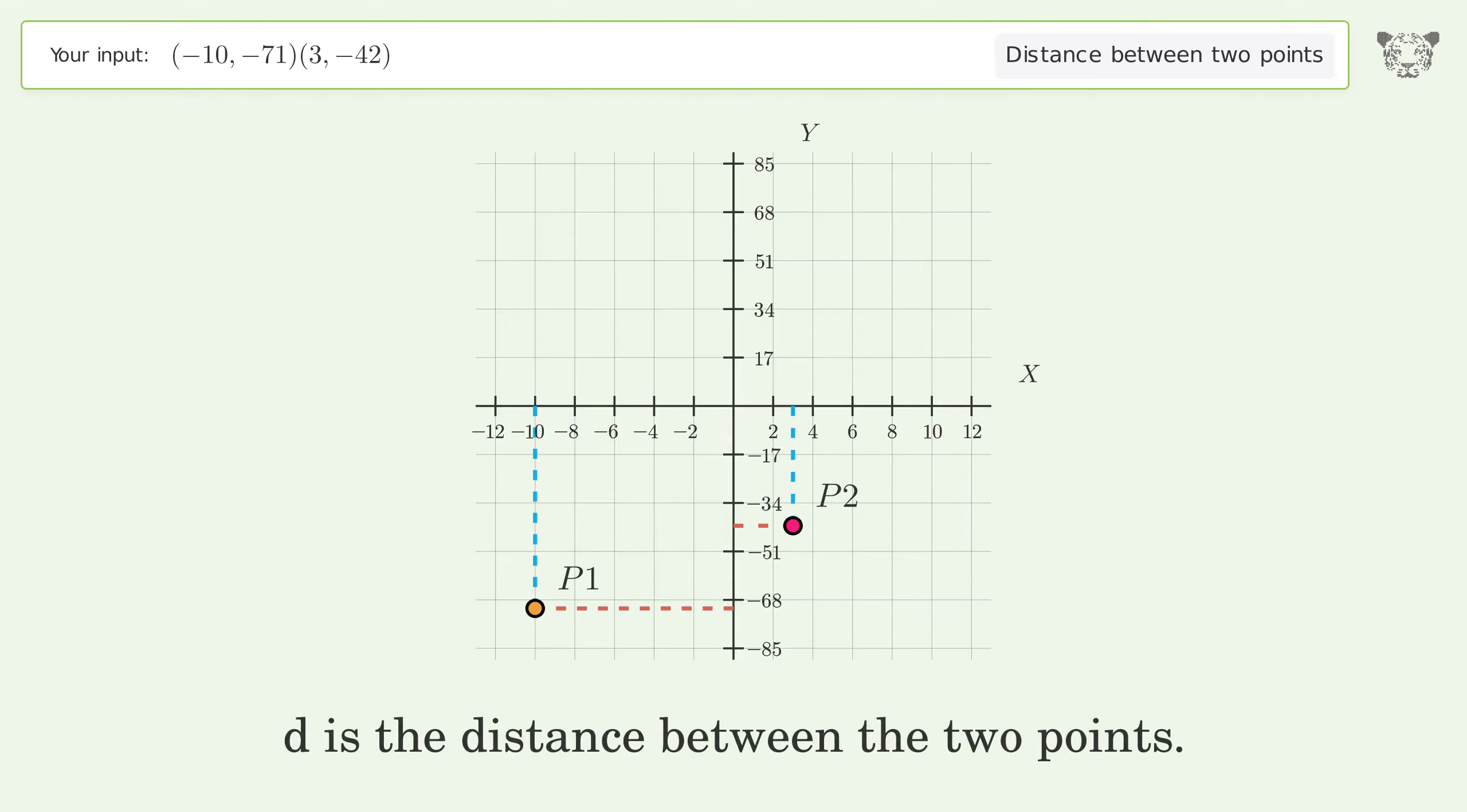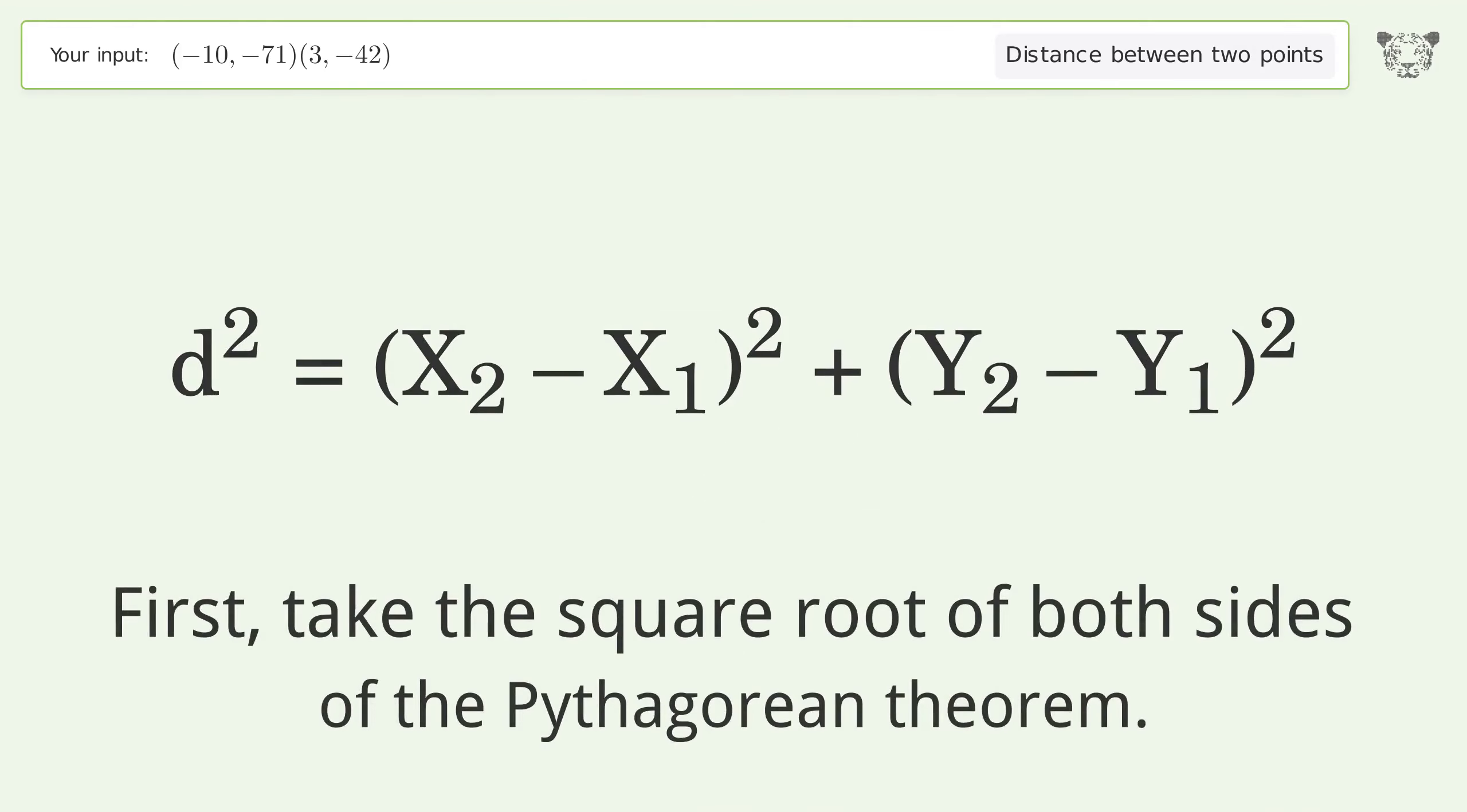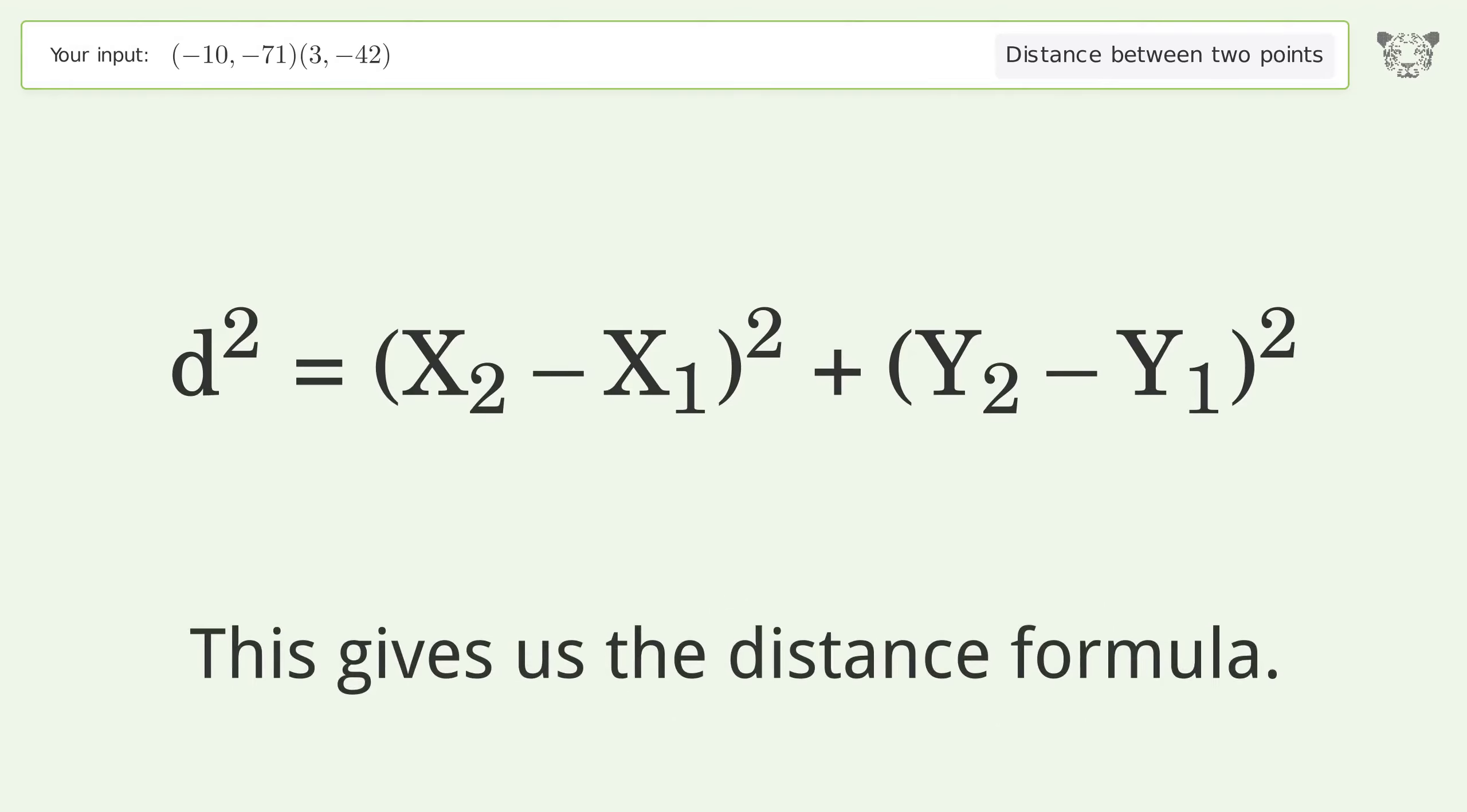d is the distance between the two points. First, take the square root of both sides of the Pythagorean theorem. This gives us the distance formula.